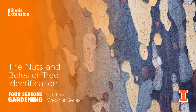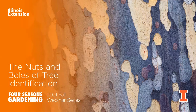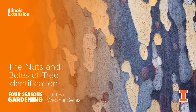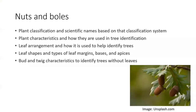Just as a side note — that's not a typo. It is 'the nuts and bolts.' A bole is a term for the main axis or stem or the trunk of a tree. So it wouldn't be one of my programs or an extension program without a corny joke. So what are some of the nuts and bolts, or the very basics of tree ID?